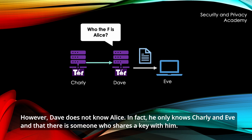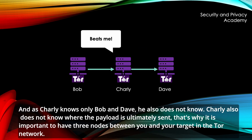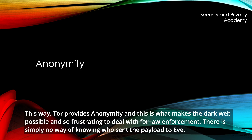However, Dave does not know Alice. He only knows Charlie and Eve, and that there is someone who shares a key with him. Charlie knows only Bob and Dave, so he also doesn't know Alice, and Charlie doesn't know where the payload is ultimately sent. That's why it is important to have three nodes between you and your target in the TOR network. This is what makes the dark web possible and so frustrating to deal with for law enforcement.